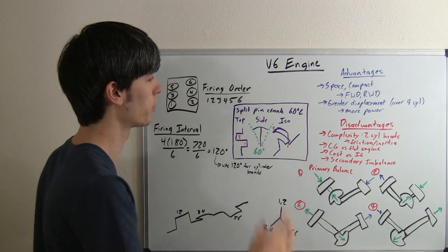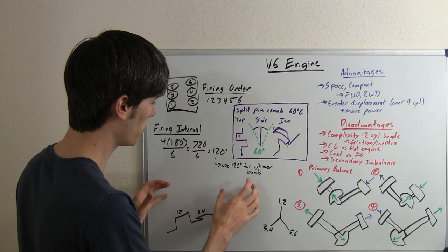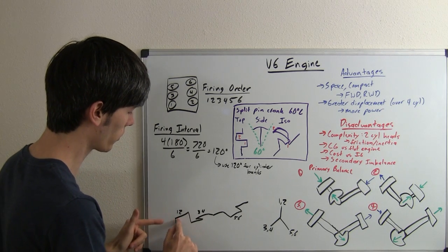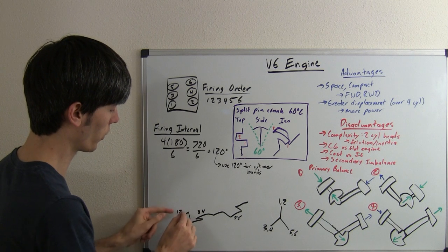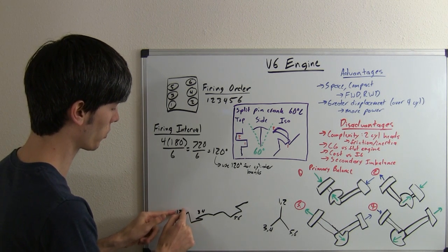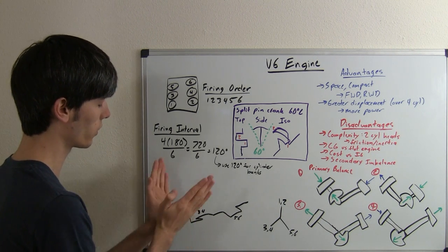Now, what a split pin crank is, is you're taking this crank pin, where the connecting rods connect to the crankshaft, and you're altering it so that cylinders one and two are at different locations on that angle.